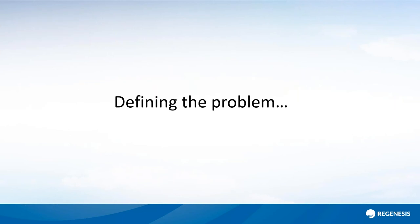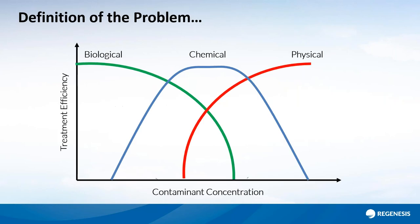So, defining the problem. Why did we come up with the concept of liquid activated carbon? Here is a graph that you may or may not have seen. It's a useful approximation for considering remedial approaches for your site. On the x-axis you can see the contaminant concentration going from very low dissolved phase concentrations on the left to free phase NAPL on the right. The treatment efficiency is on the y-axis.